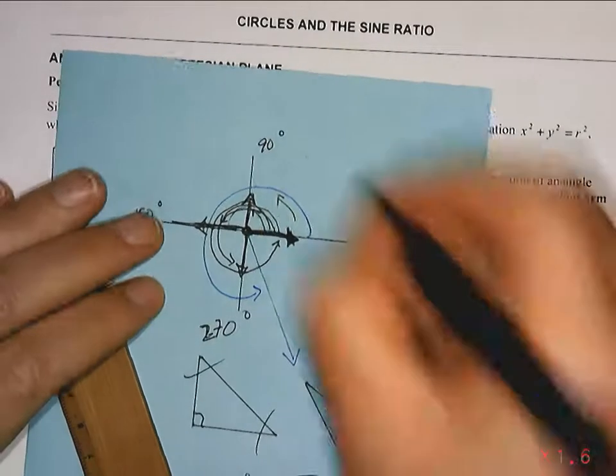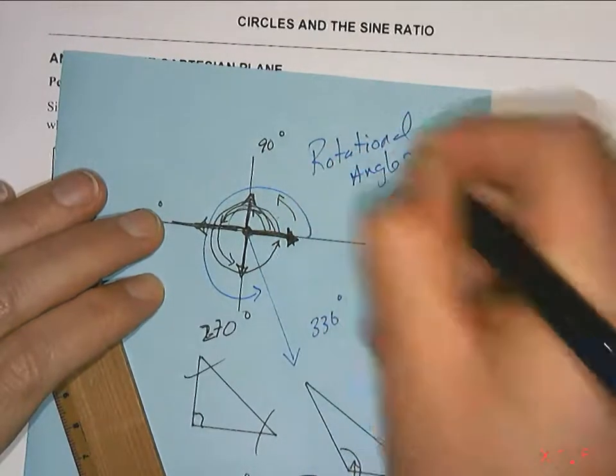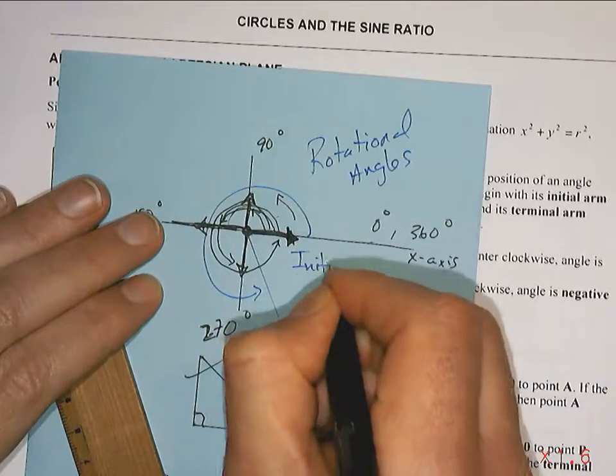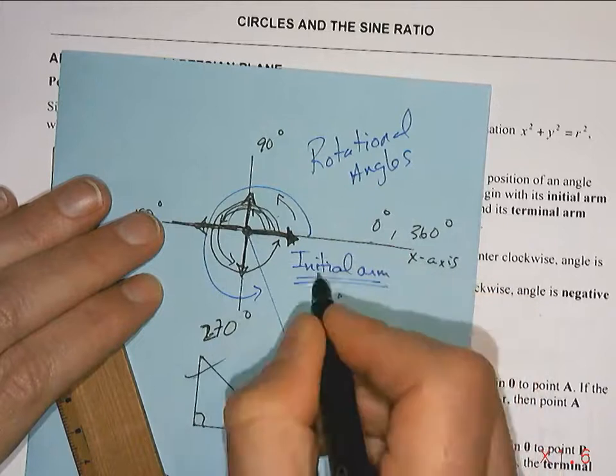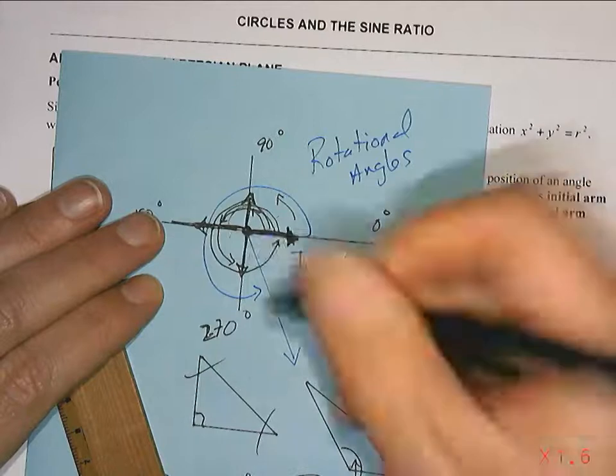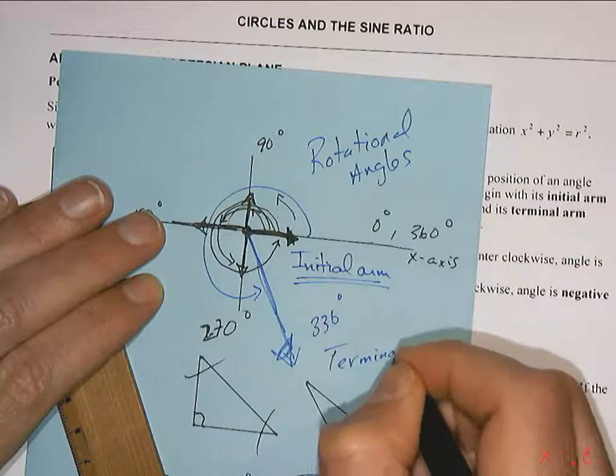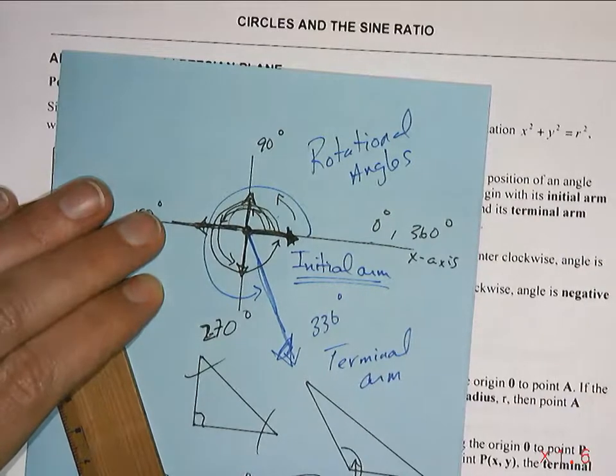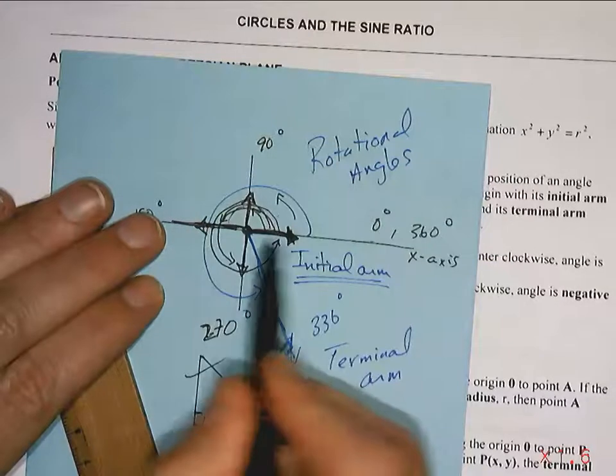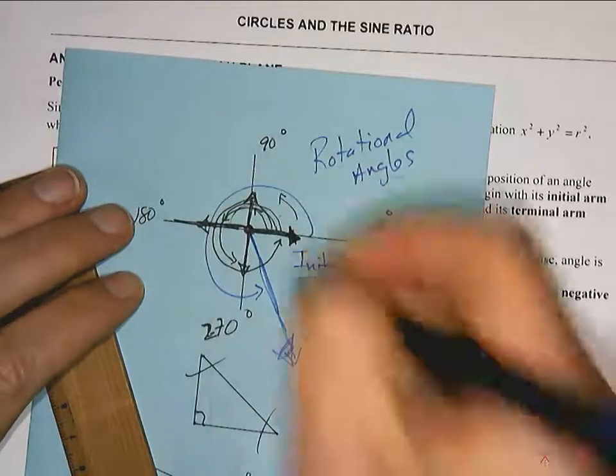These are called rotational angles. Rotational angles. And I think it makes sense. It's a rotation from what we call an initial arm. That's a starting point, initial, from a starting point. And the initial arm is always along the positive x-axis. And wherever it stops, we call that the terminal arm. Terminal, the end of the line. So, terminal arm. Rotational angle, initial arm, always along the positive x-axis. And terminal arm, wherever it stops. And the angle that it takes to get there.